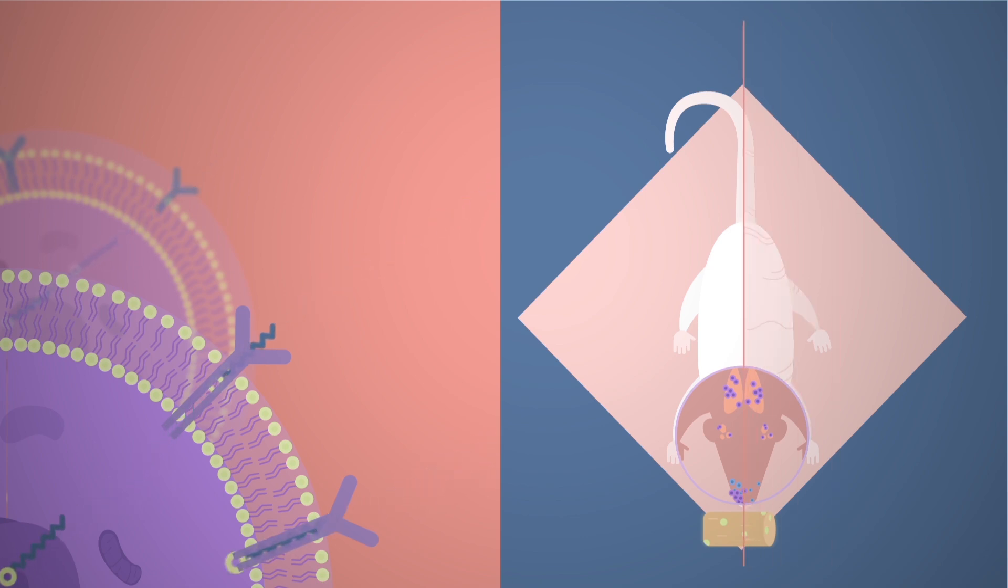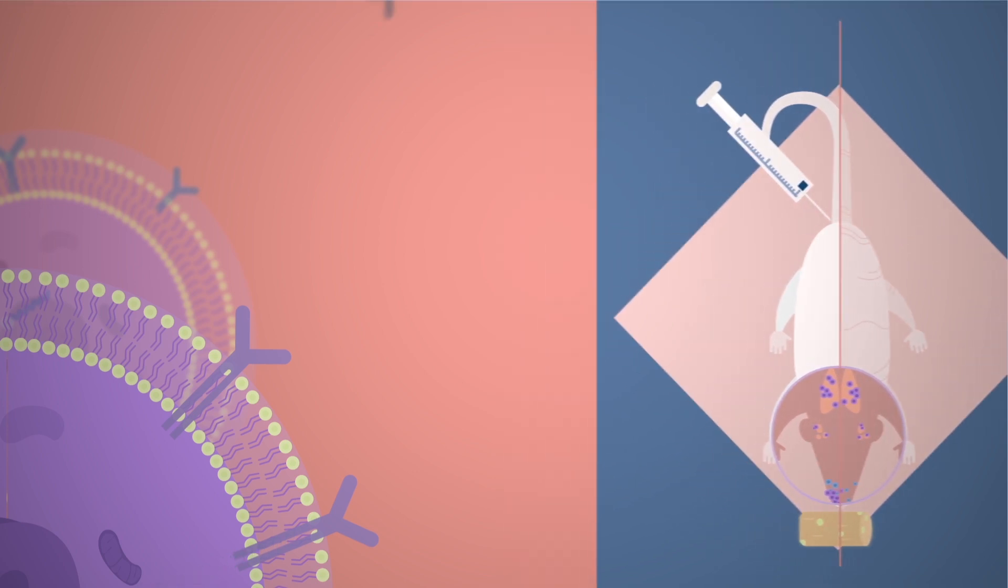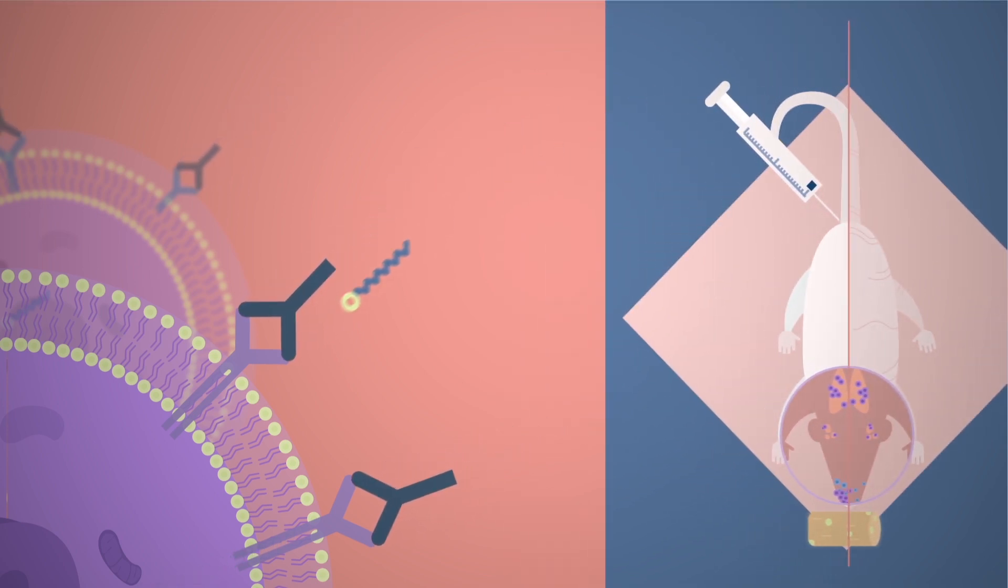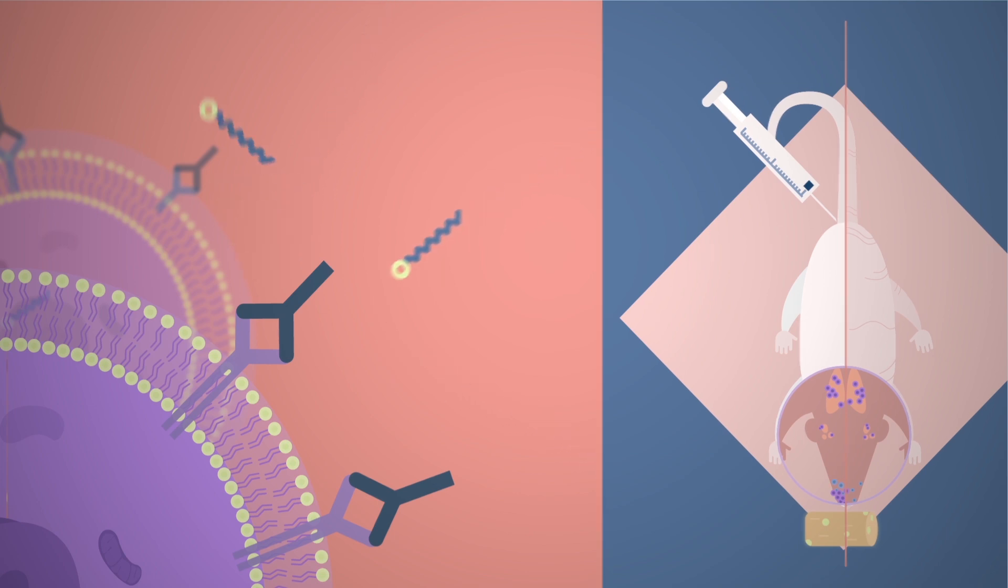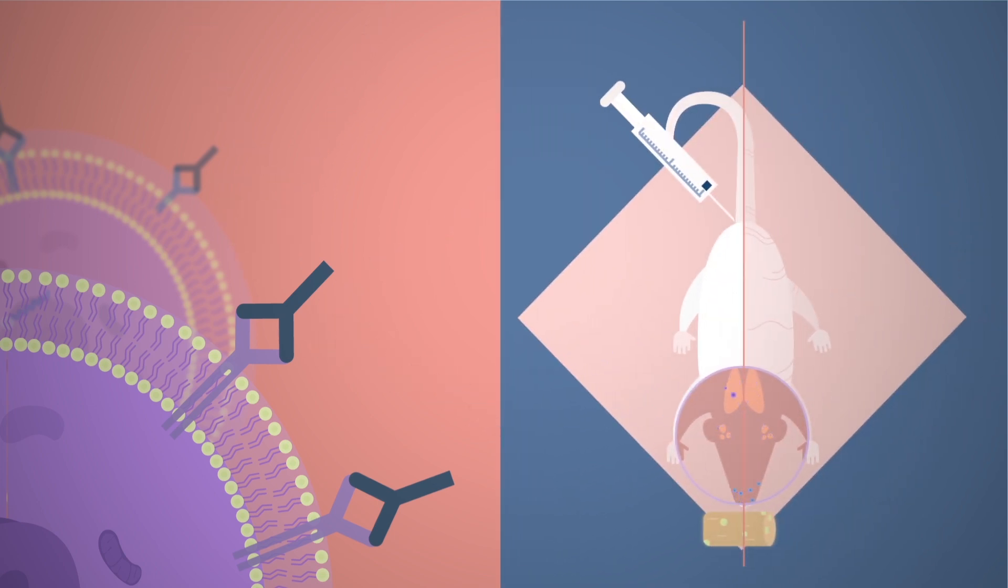Thus, CD36 appeared as a possible target for anti-cancer drugs and this was confirmed when the IRB Barcelona team used antibodies to block the protein, decreasing the number of metastatic spots or even completely wiping out metastatic cells in some mice.